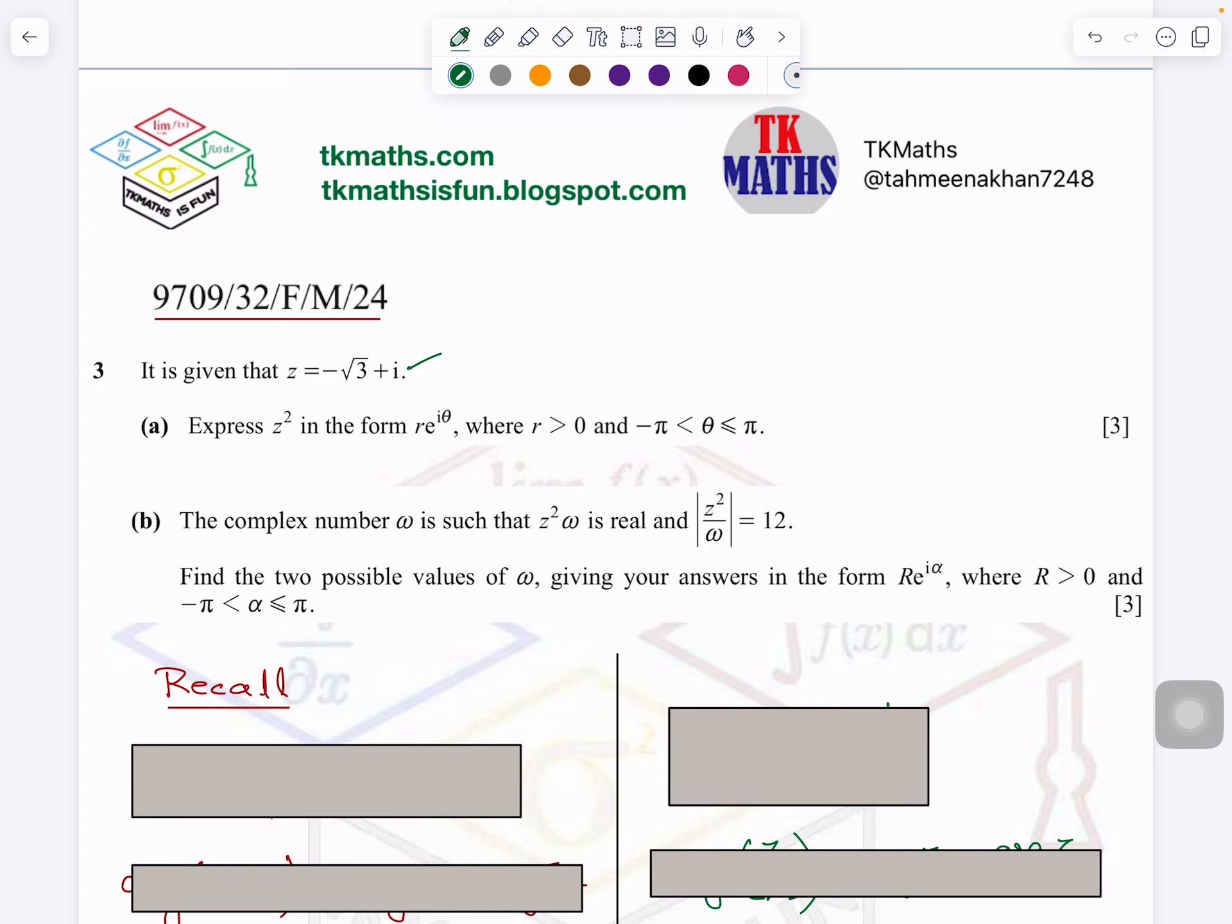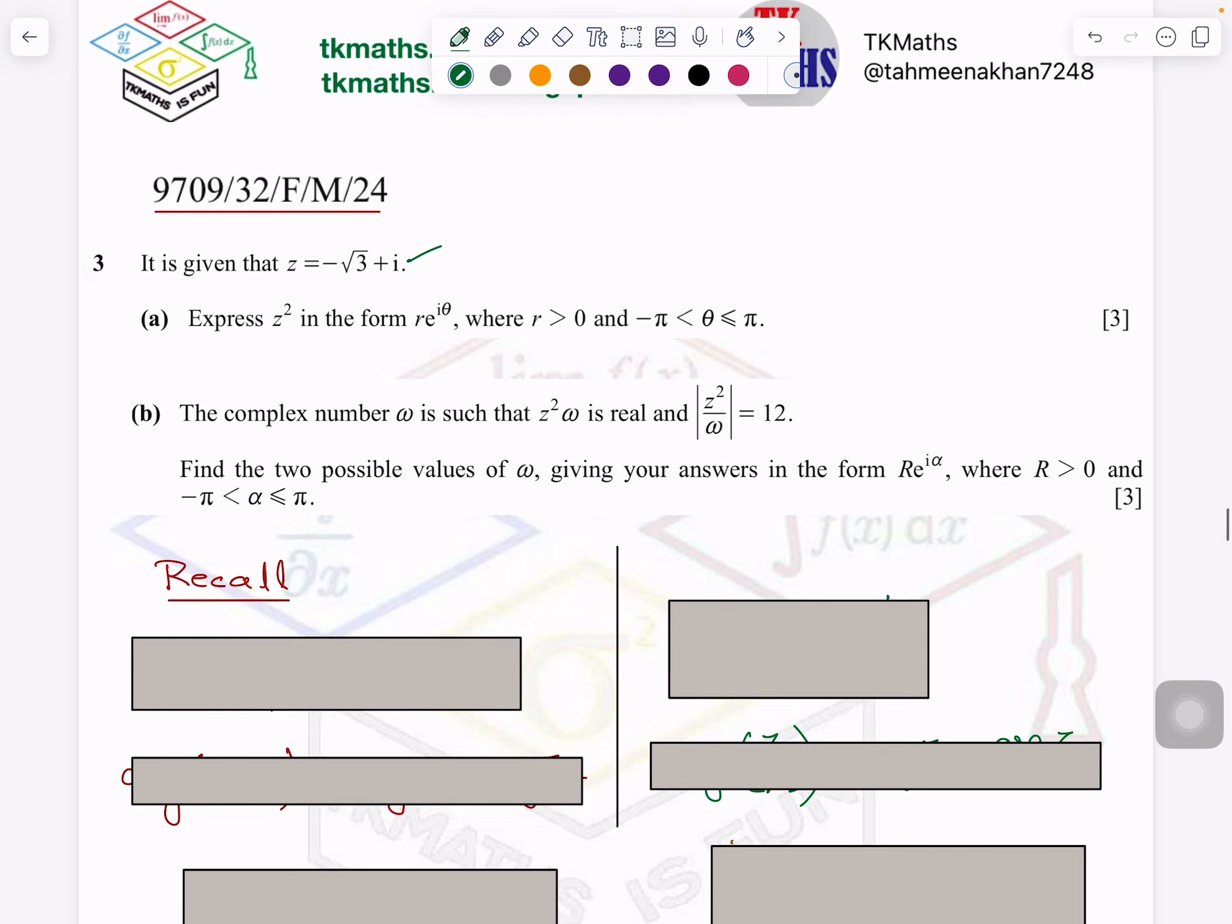So there are two methods for part A and two methods for part B. The video will be a little lengthy but I would say do watch it so that you can think differently in different situations. So let's see here the first form, Z square in the form R e^(iθ).